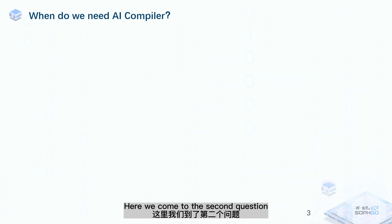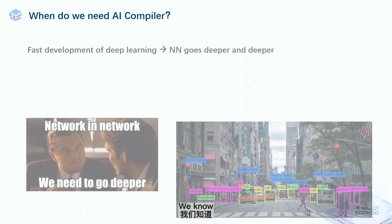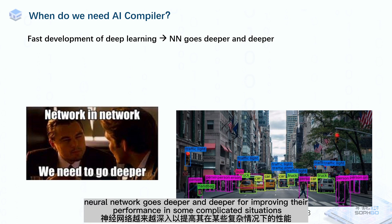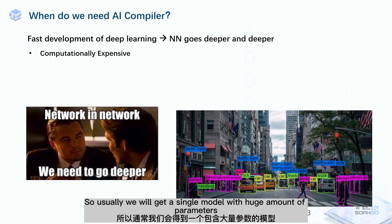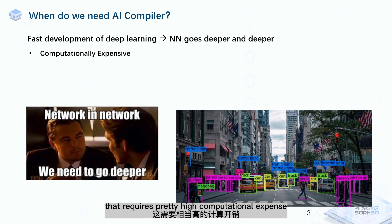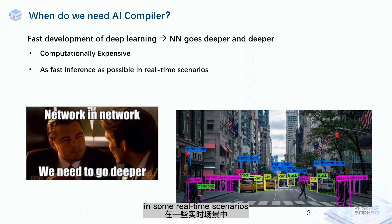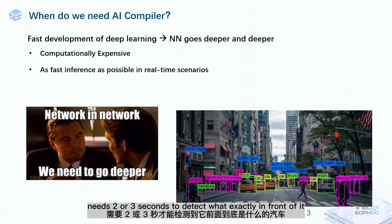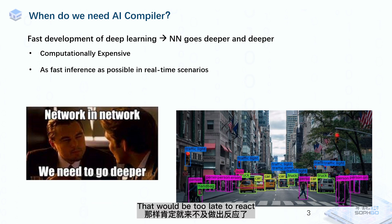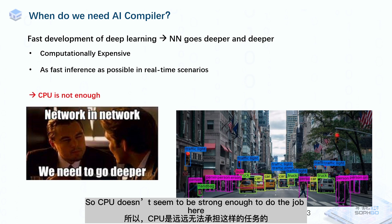Here we come to the second question: when do we need an AI compiler? We know that with the fast development of deep learning, neural networks go deeper and deeper for improving their performance in complicated situations such as object detection. Usually we get a single model with a huge amount of parameters that requires a pretty high computational expense. In addition, in some real-time scenarios such as autonomous driving, we may want our model to do prediction work as fast as possible. Nobody wants a car that needs two or three seconds to detect what's in front of it — that would be too late to react. So CPU doesn't seem to be strong enough to do the job here.